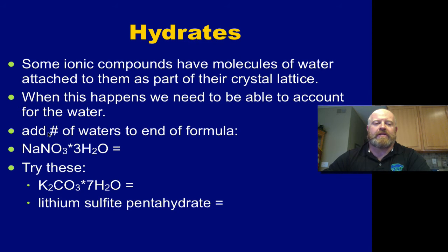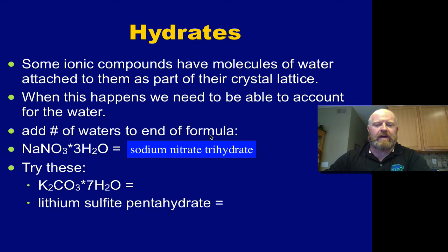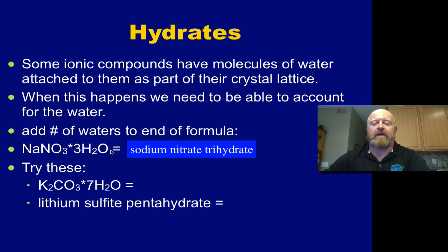All we really need to do is add the number of waters to the end of the formula. So for example, if we have sodium nitrate and it attaches three waters to it, we're going to say sodium nitrate, then use a little star to say that for every one sodium nitrate, it's going to have three waters. When we name this, all we do is add the prefix for how many waters we have and then say the word hydrate behind it. So sodium nitrate with three waters would be sodium nitrate trihydrate.